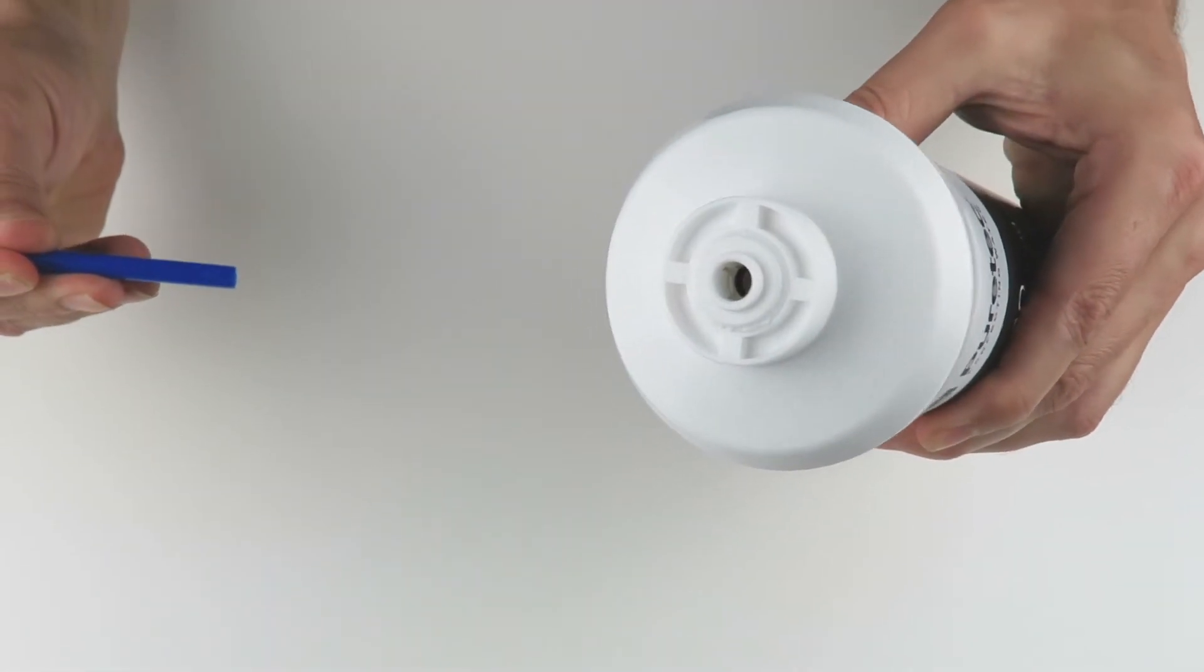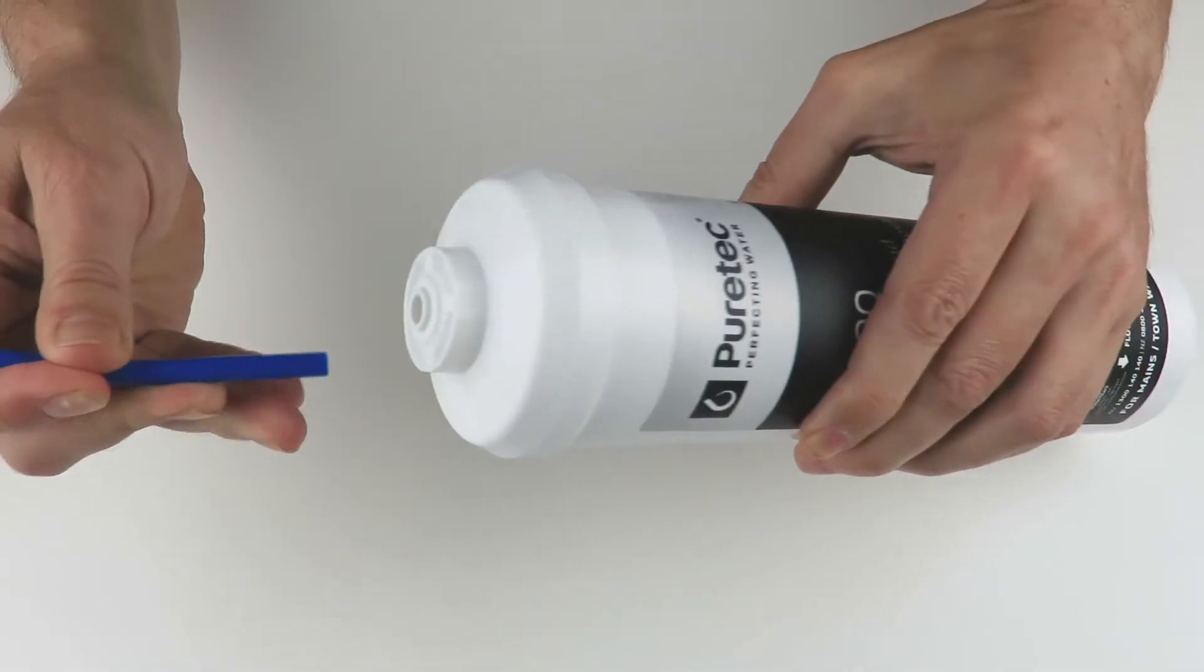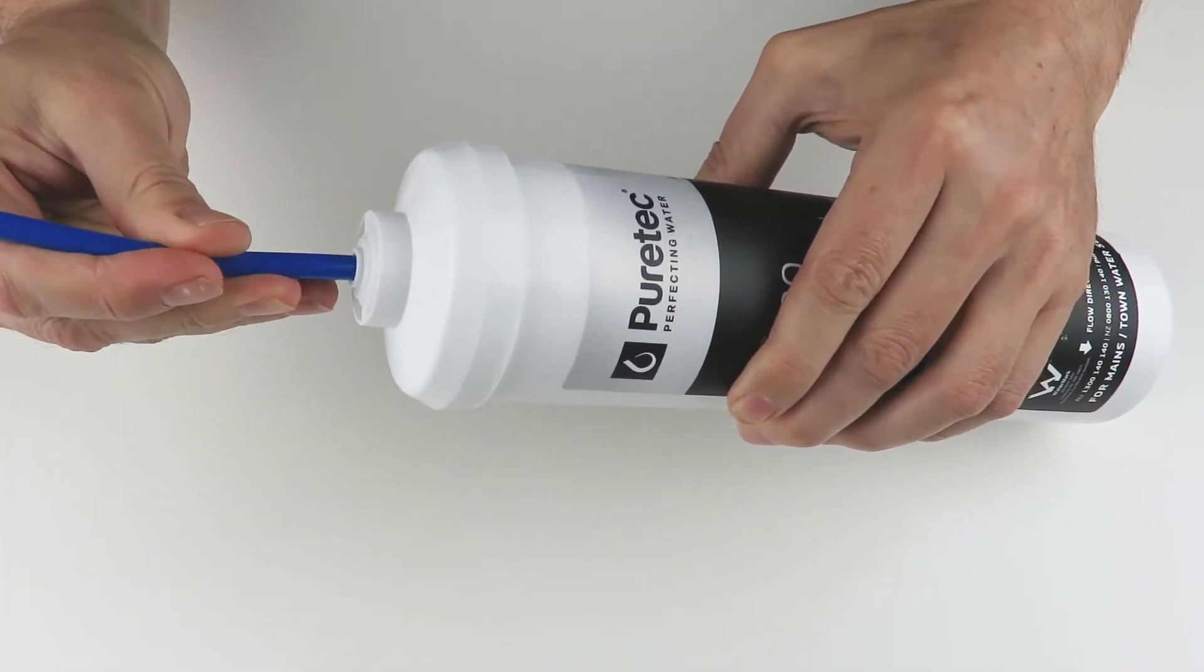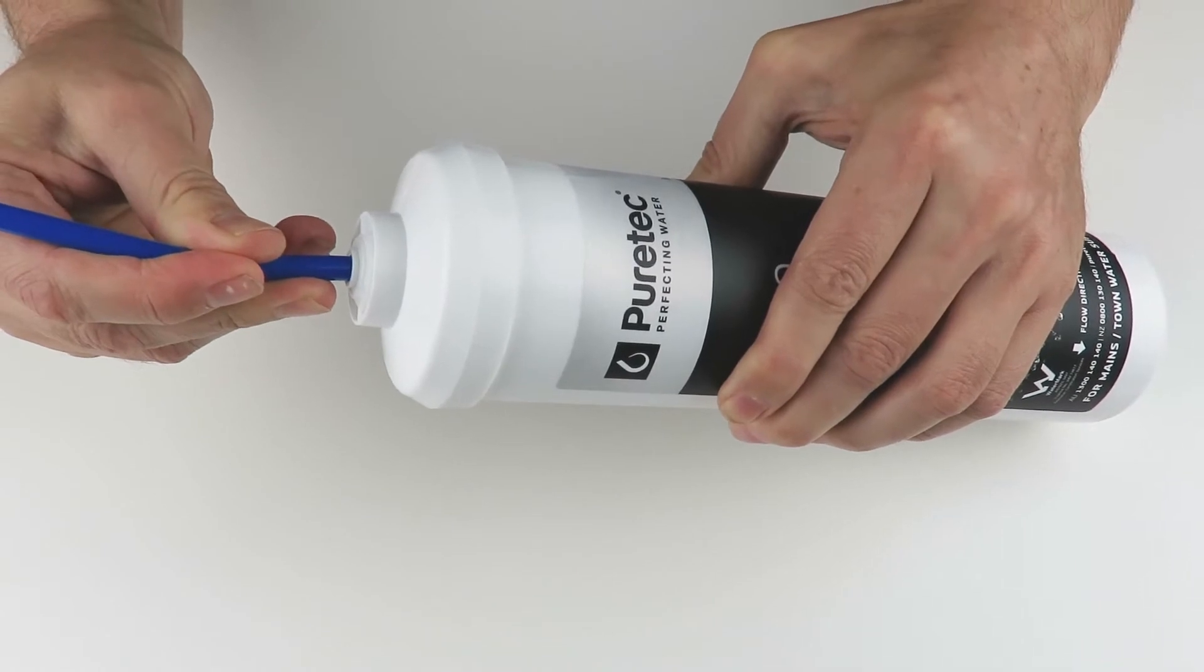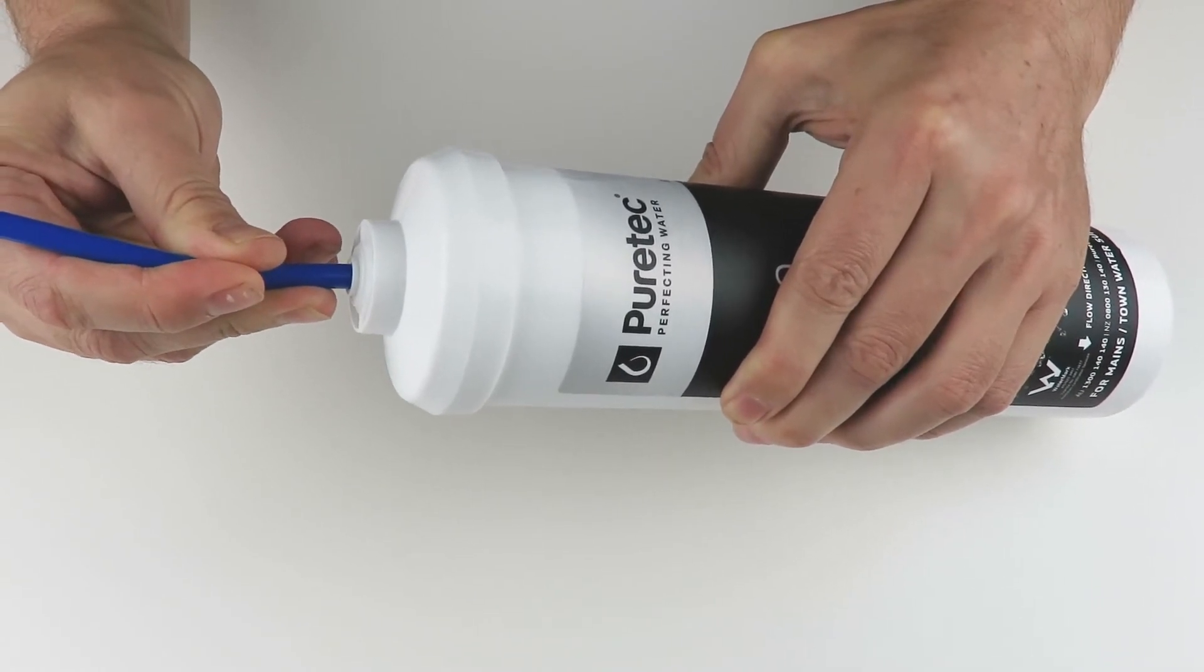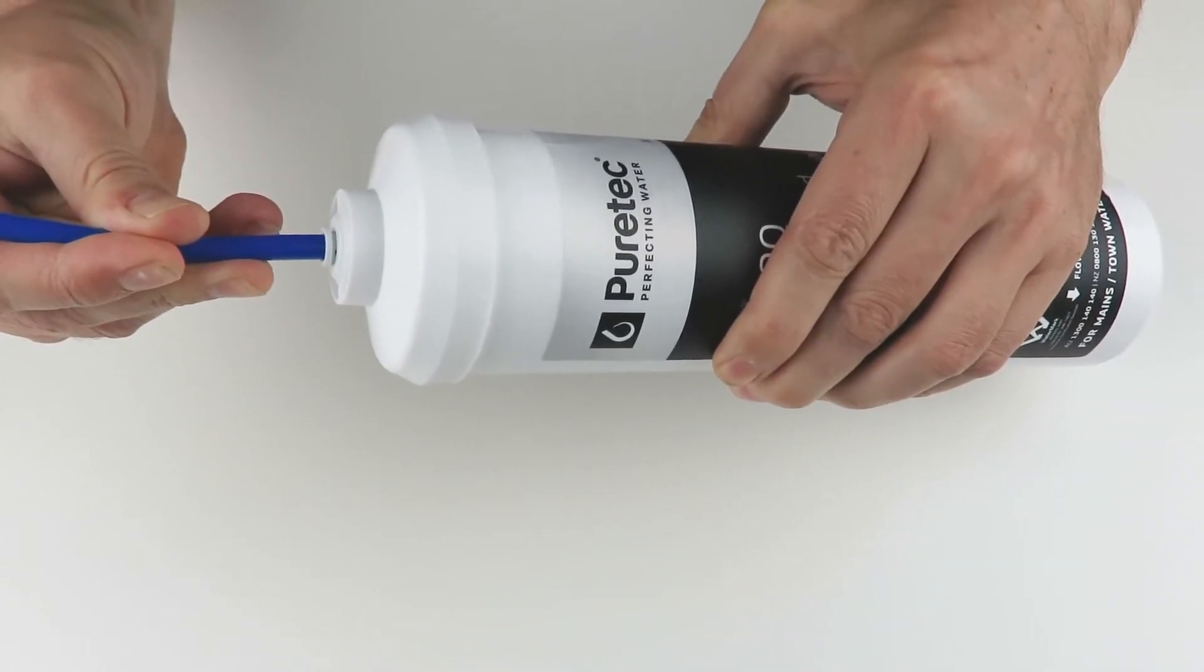To install the hose, simply insert the hose into the cartridge or other fitting and push it all the way in. This will result in a secure and watertight connection.